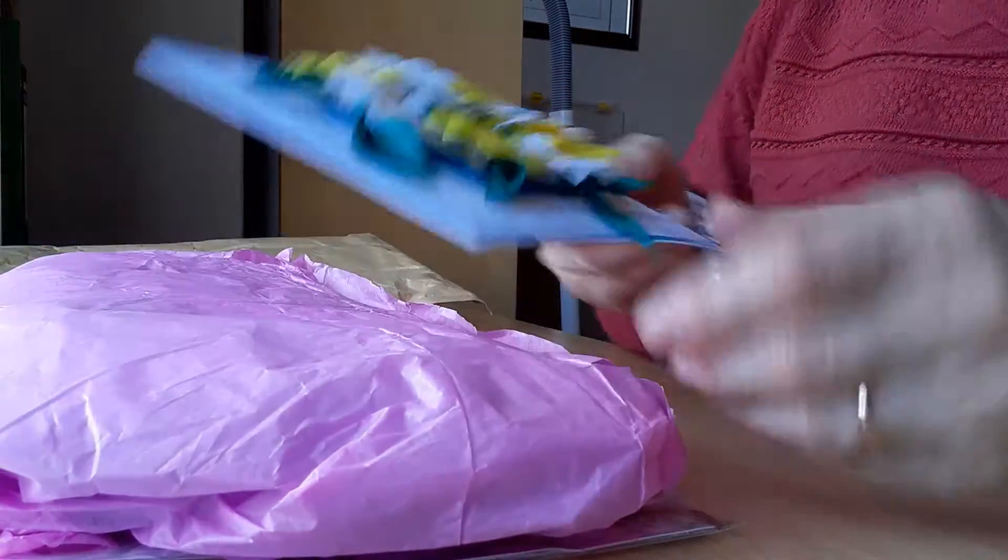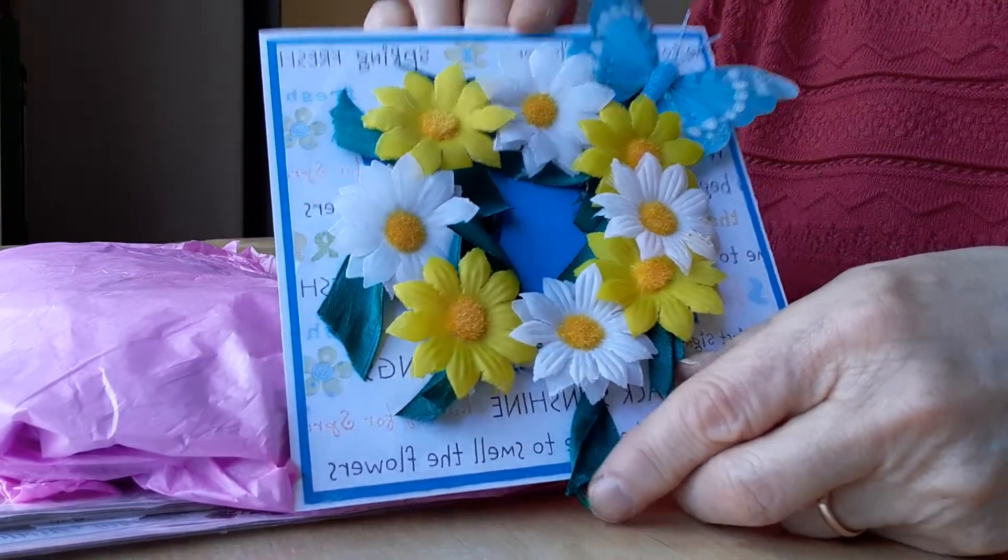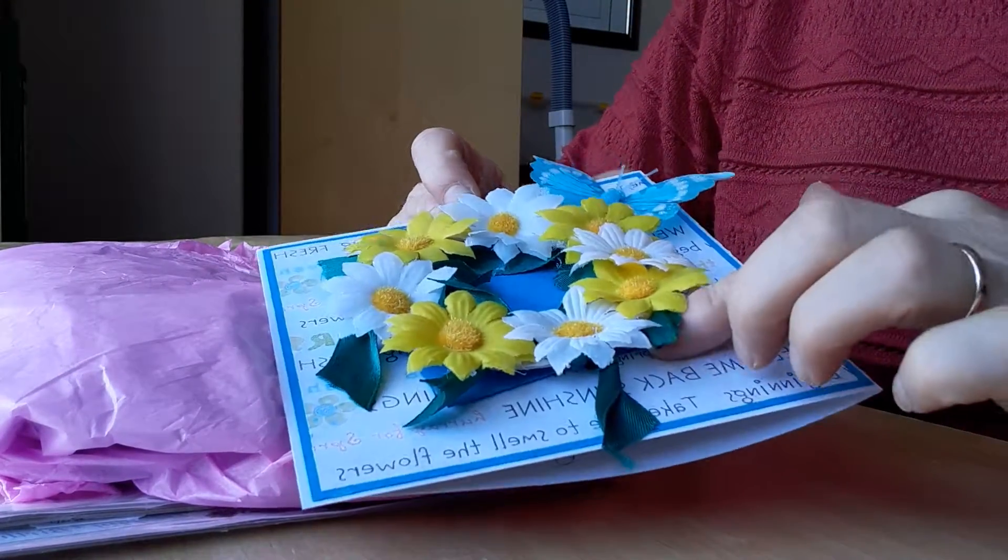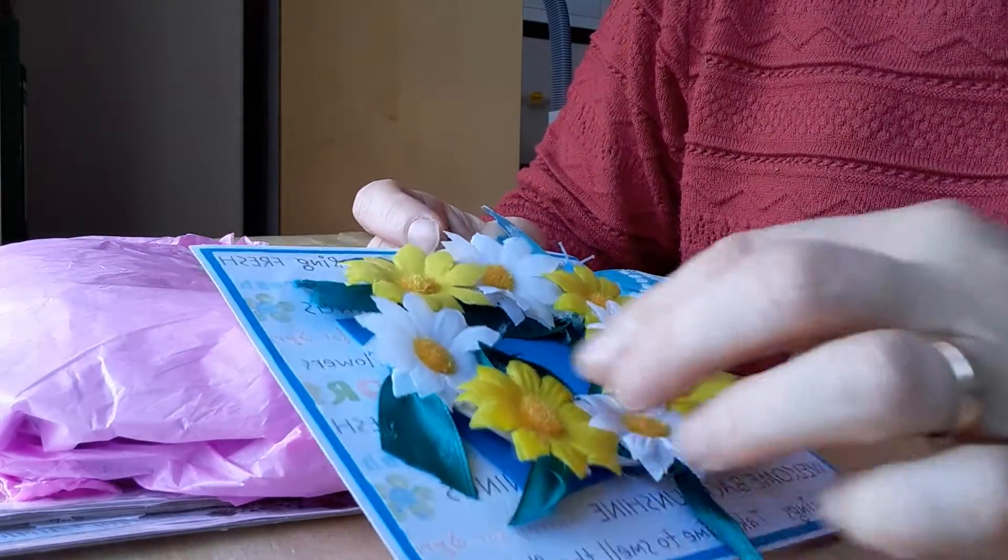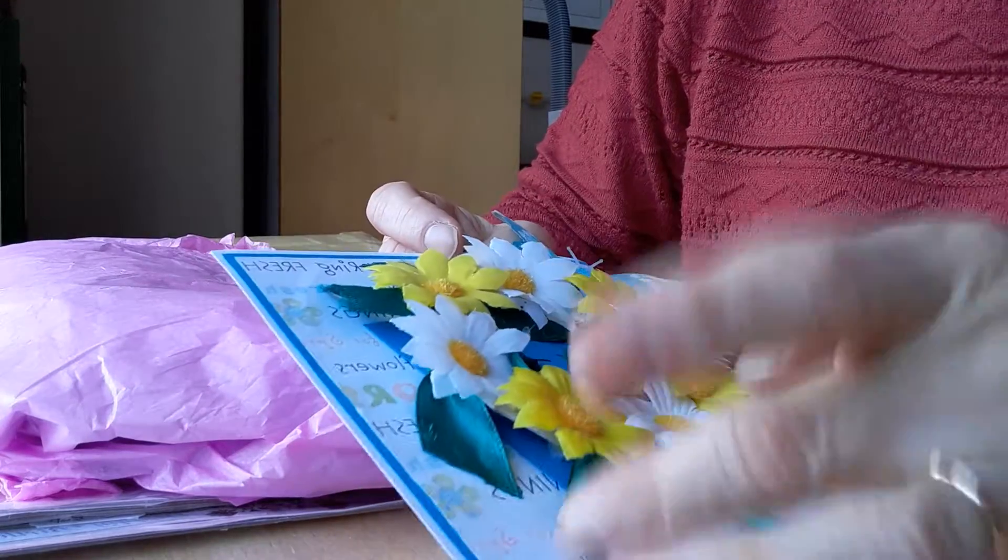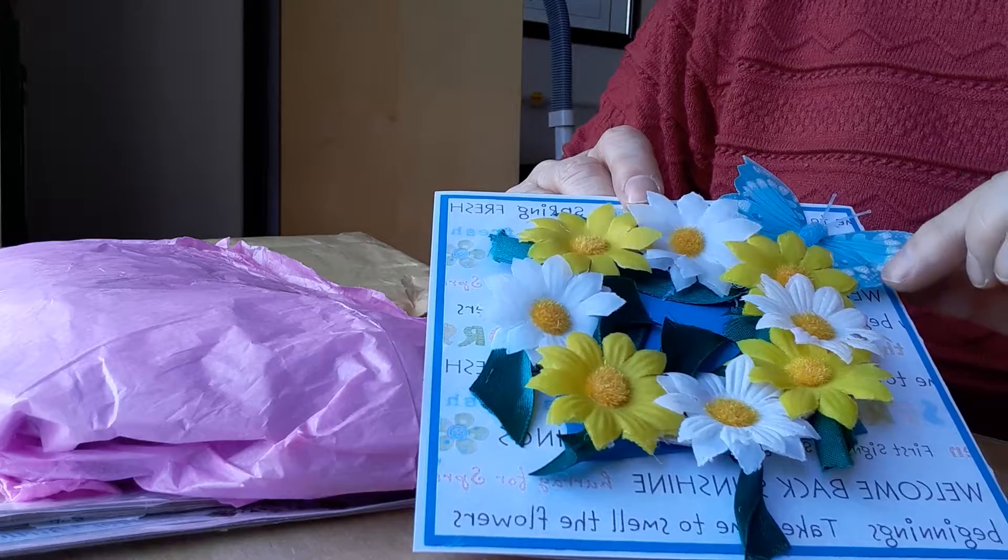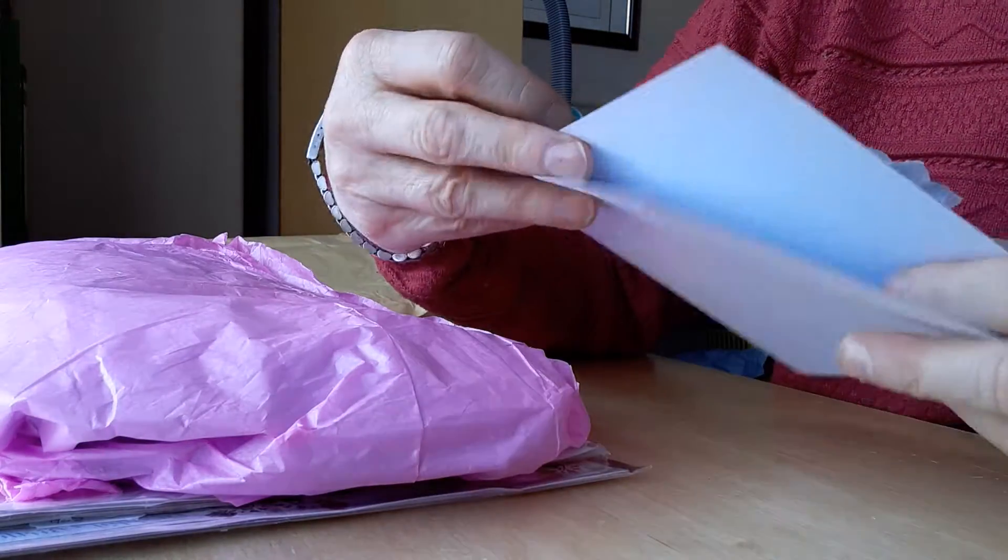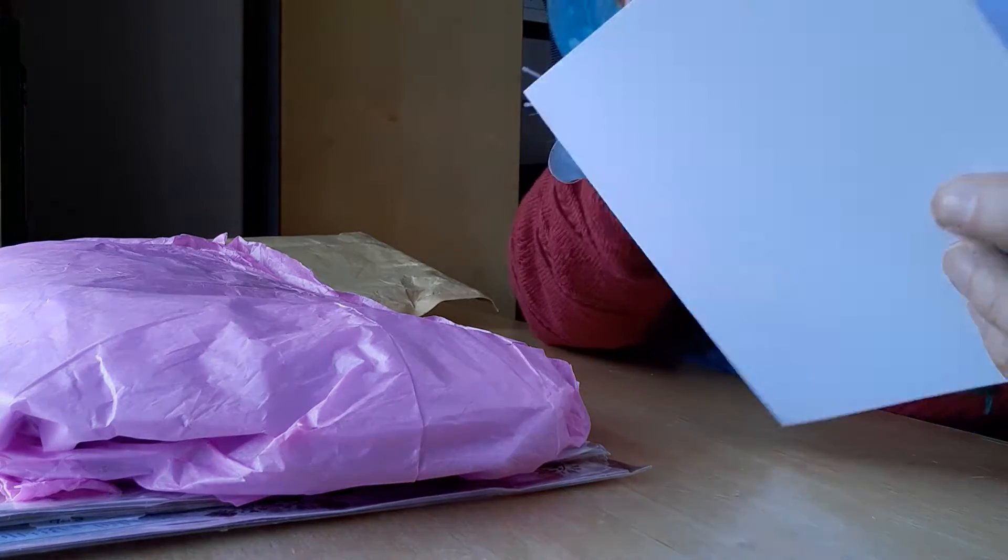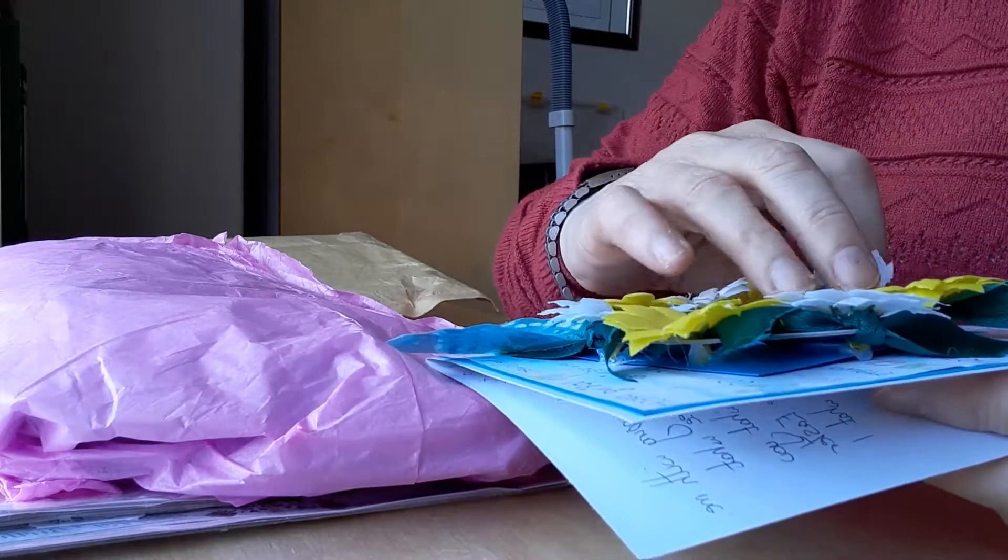This is the card that she made for me and I think it's absolutely beautiful. These flowers are glued to a ring of card and then interspersed with these lovely green ribbons to make it look like leaves, with this lovely butterfly stuck here.